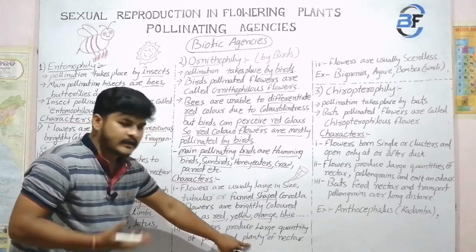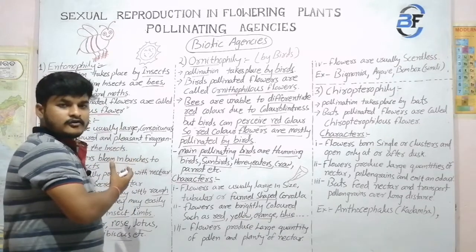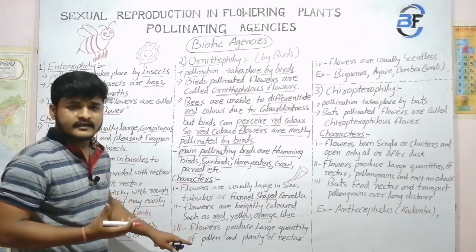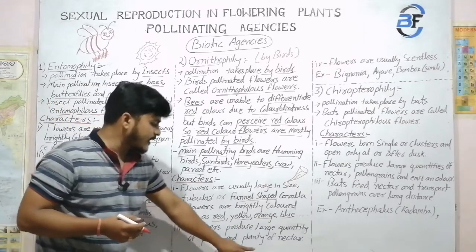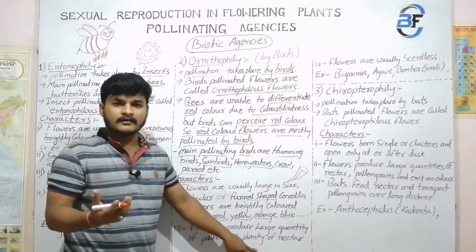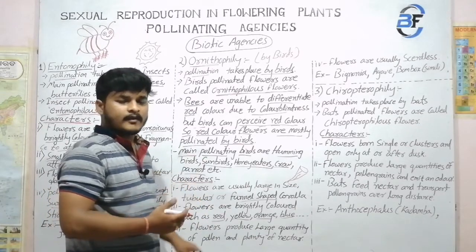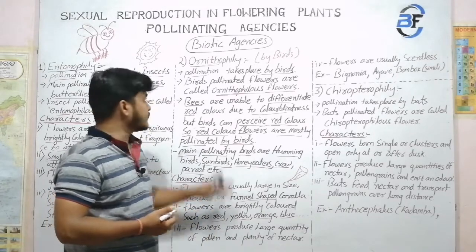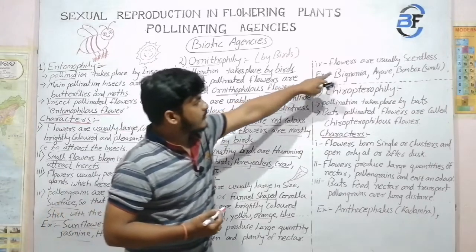Why plenty of nectar? Because nectar and fragrance both attract — in Entomophily I told you that it also contains nectar and fragrance. But in Ornithophily, the flowers are mostly scentless. There is plenty of nectar and plenty of pollen, so the pollen is transferred by birds in this technique from one flower to another flower. Birds can fly long distances, so cross-pollination of a number of flowers takes place. Flowers are usually scentless — they are practically attractive in color, having nectar, but having no fragrance.